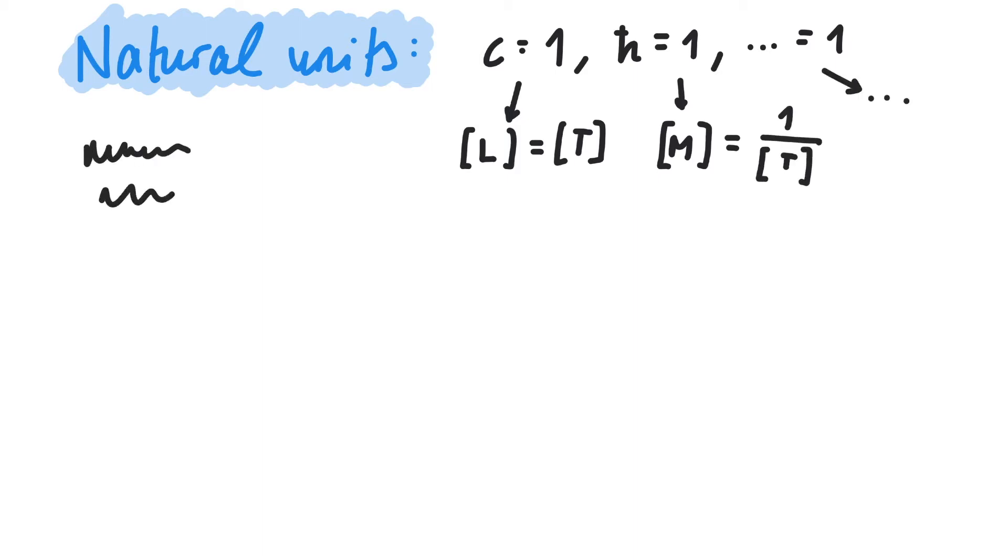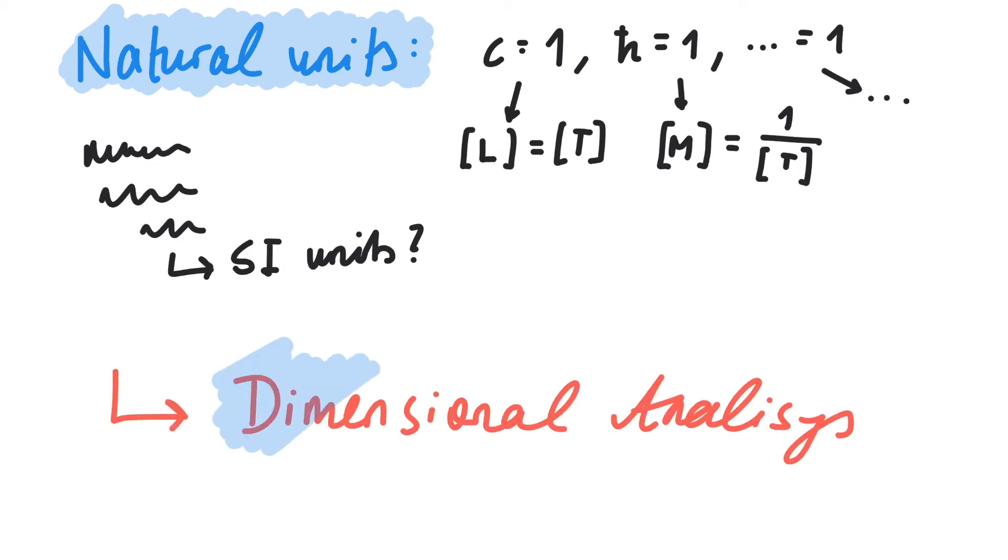But what if, after calculating for a long time, we want to check our results against an experiment? It's useful to know how to restore SI units to our equations. This is known as dimensional analysis. Let's do some examples.